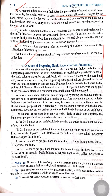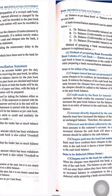Now I will tell you the procedure for preparing the Bank Reconciliation Statement. We have to see that the balance as per cash book may be either debit or credit, and similarly the balance as per pass book may be debit or credit. First we have to decide from which balance we will start preparing the BRS.